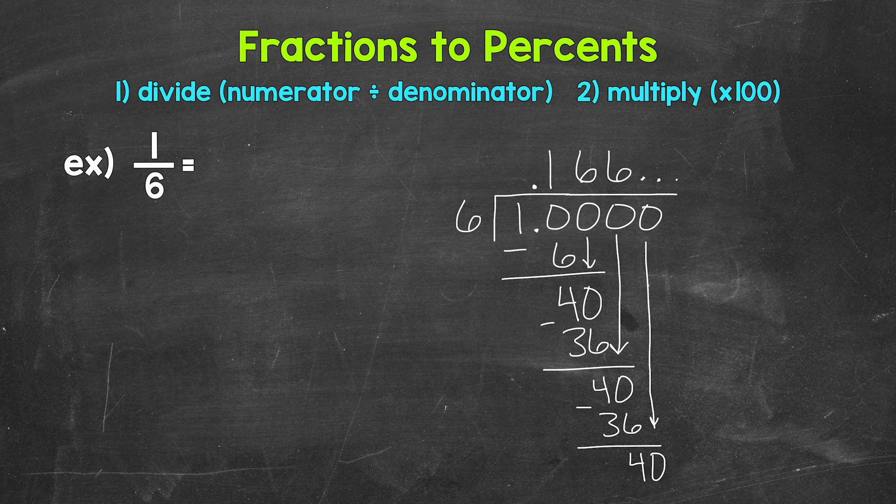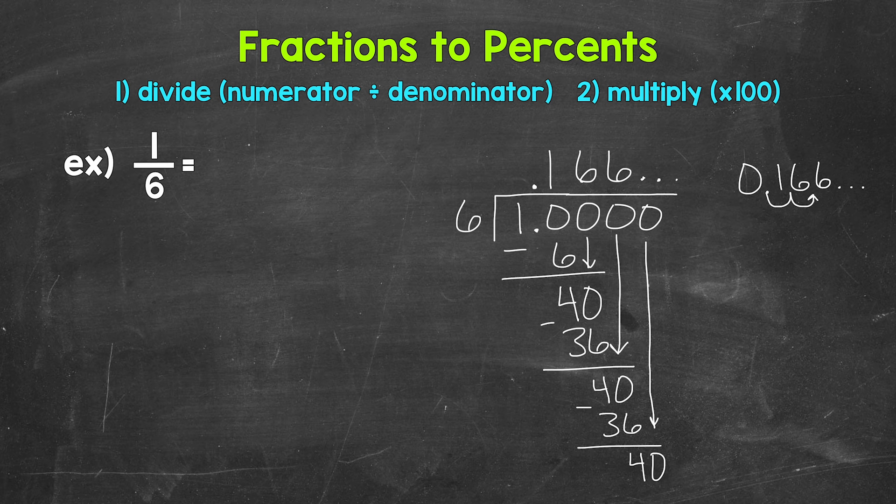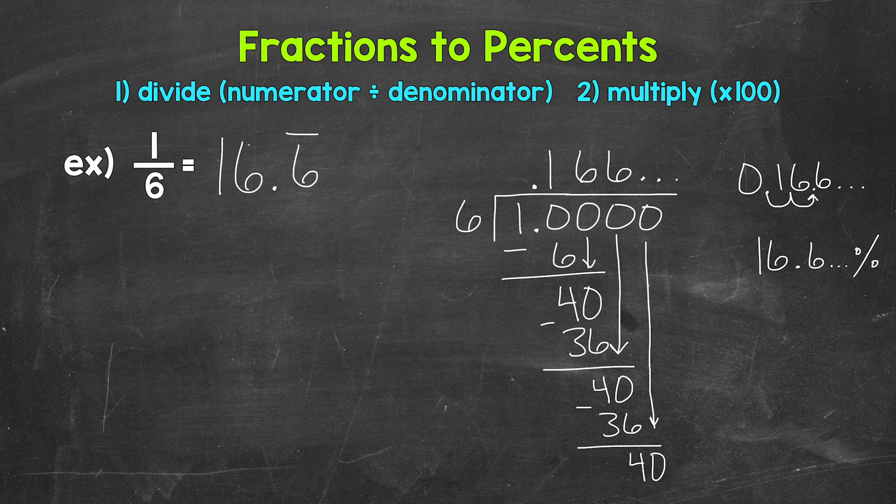So we can stop there and convert this decimal to a percent now. And we do this by multiplying it by 100. And again, we can multiply by 100 by moving the decimal twice to the right. So let's rewrite our decimal over here. So 0.166 and the sixes repeat. And we need to move the decimal once, twice to the right. This gives us 16.6 repeating percent. Now we can write this as 16.6. And we can put a bar above that six to show that that digit repeats percent.